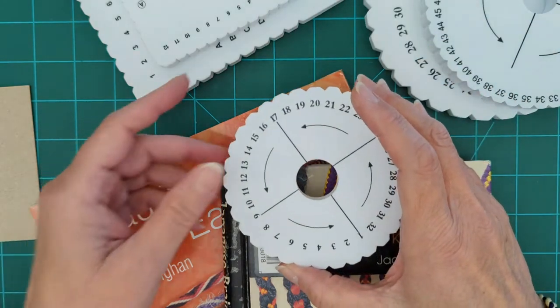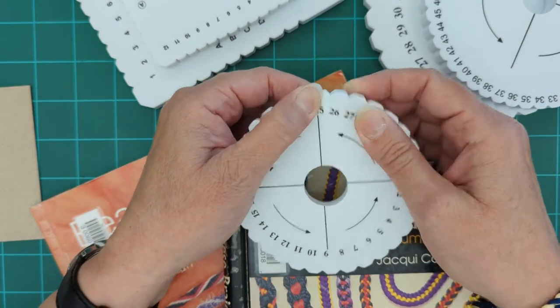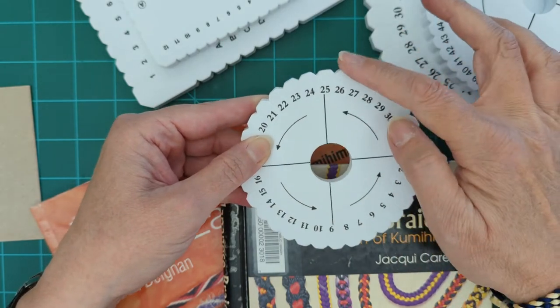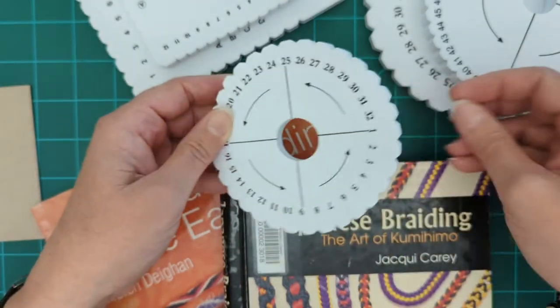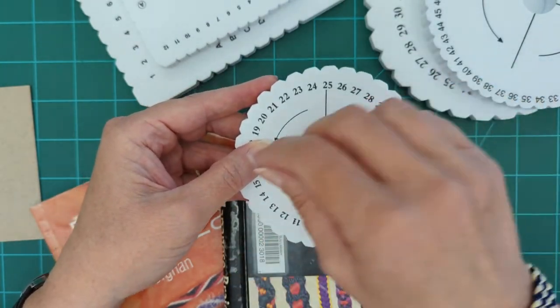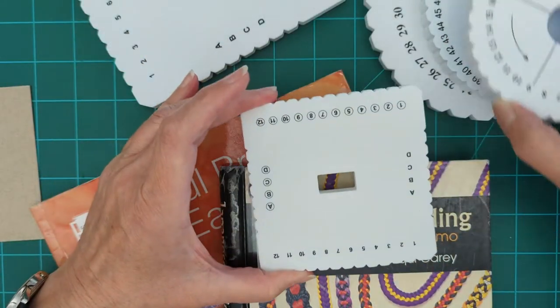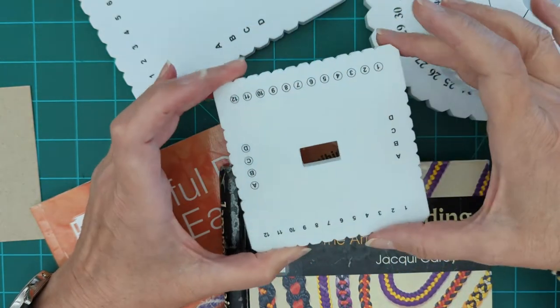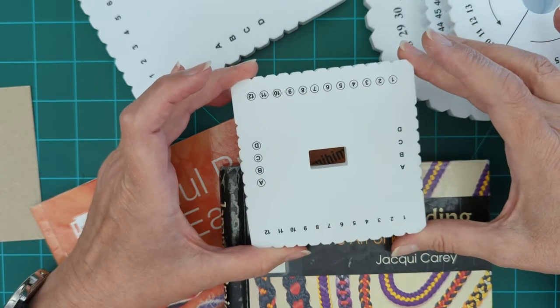This is a kumihimo disc. This is what is normally used to do kumihimo. There are slots on the edges that are numbered, and then you run your strands of cord through those slots and then down your finished braid comes out through a hole in the bottom. The pattern of the braid determines how you move the cords from one slot to another. They come in round and square. Today we're going to be doing a flat braid using a modified home DIY version of a square kumihimo plate.